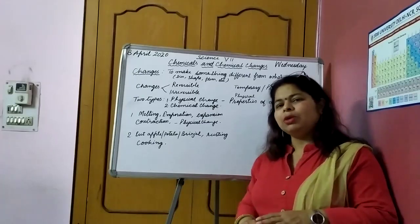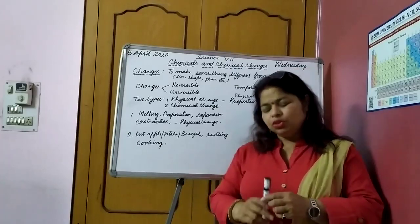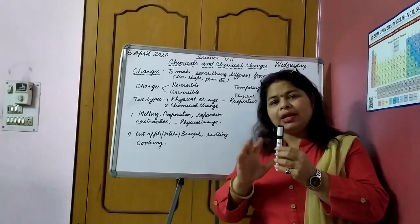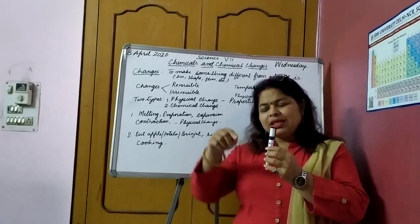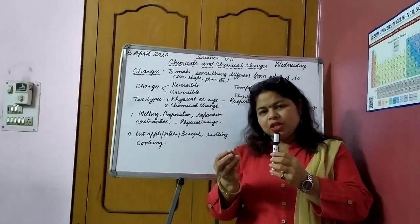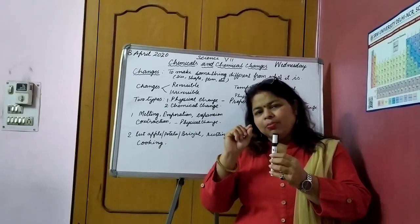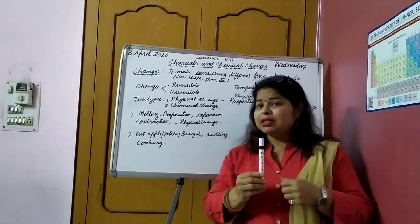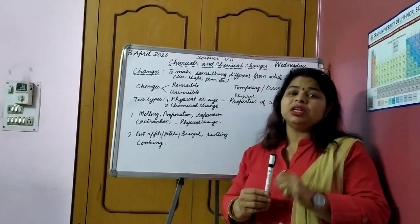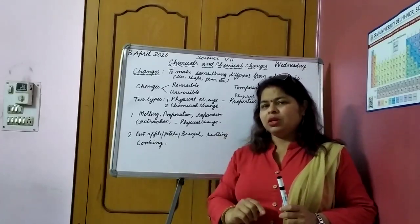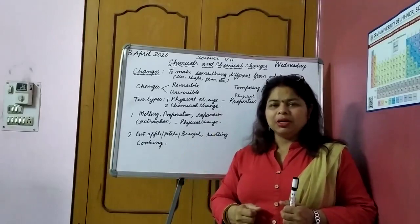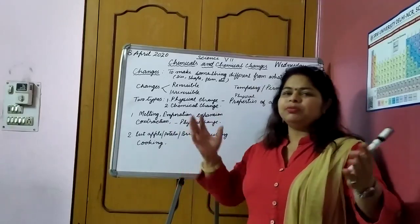Burnt paper gets converted into ash. Same way, candle — when a candle burns, by the time the whole candle burns, you will see a little patch of molten wax which has condensed, the shape has changed, and a very small black color wick. Where has the wax gone? The wax is burned — it is again a chemical change. Melting of wax is a physical change, but burning of wax is a chemical change. It got converted into CO2, carbon dioxide and water molecules, which got absorbed in the atmosphere.